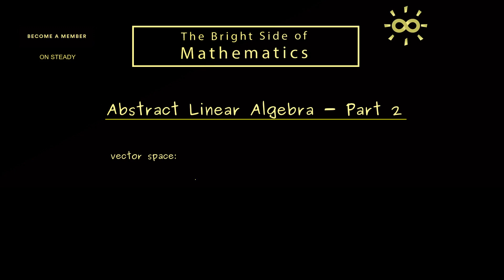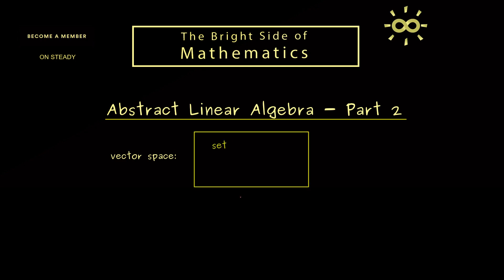We can immediately start by recalling the definition of a vector space. A very quick way to define it would be to say we have a set of vectors — we can visualize them with arrows, but please don't forget we could have very abstract objects for vectors. Therefore the defining property is what we can do with these objects: we have the vector addition and the scalar multiplication.